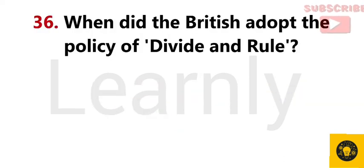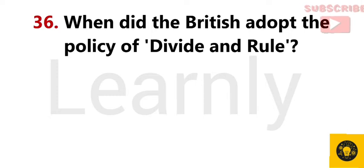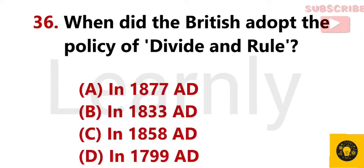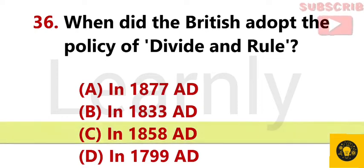When did the British adopt the policy of divide and rule? Answer C. In 1858 A.D.